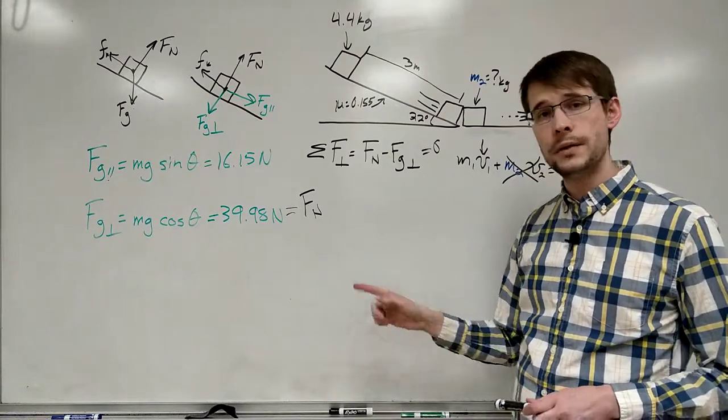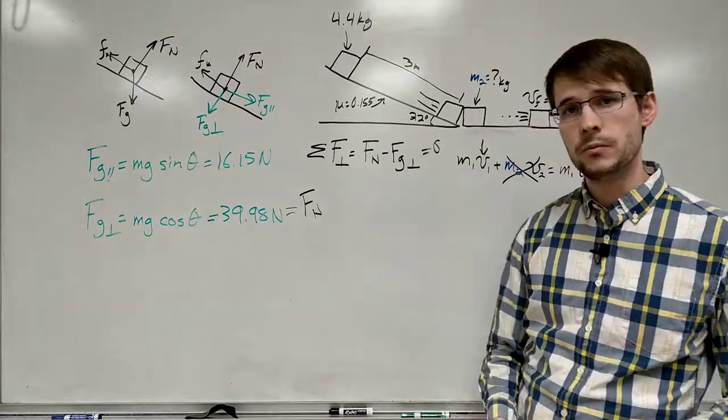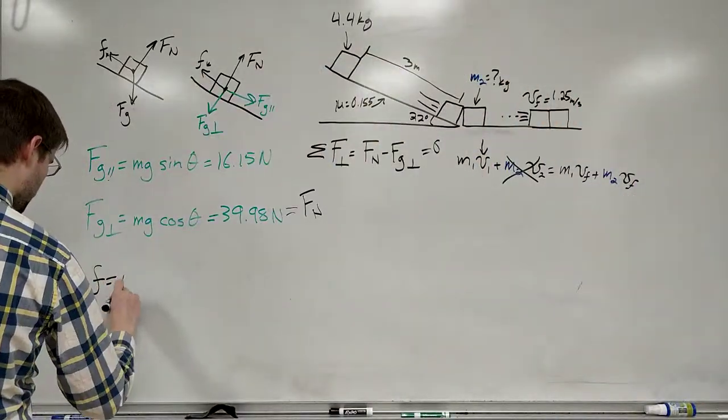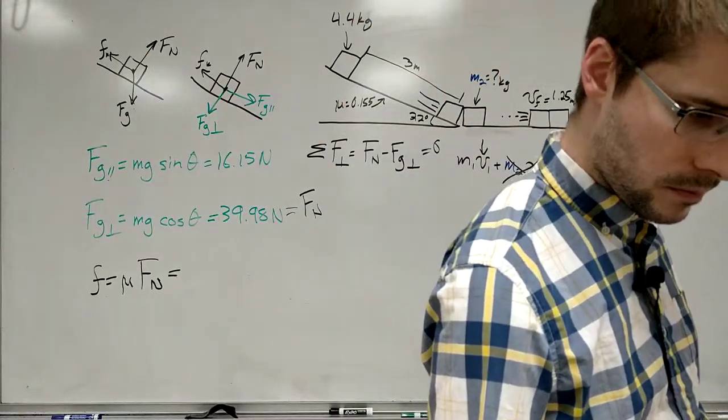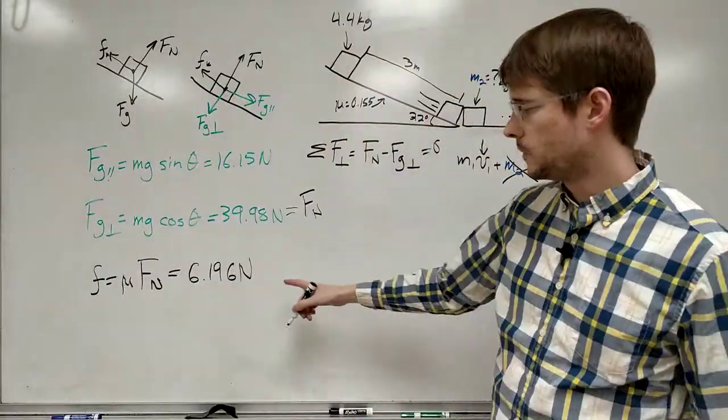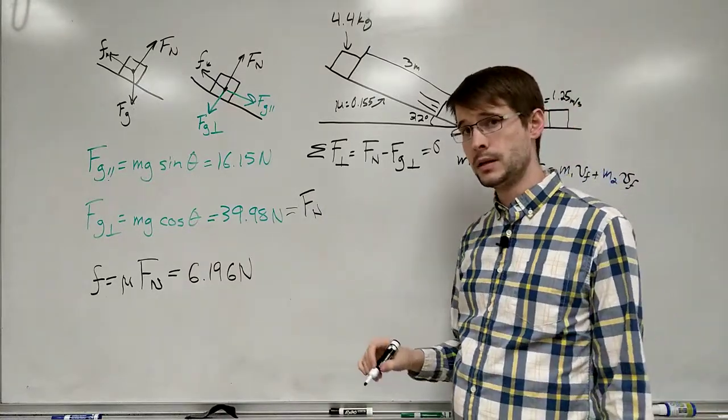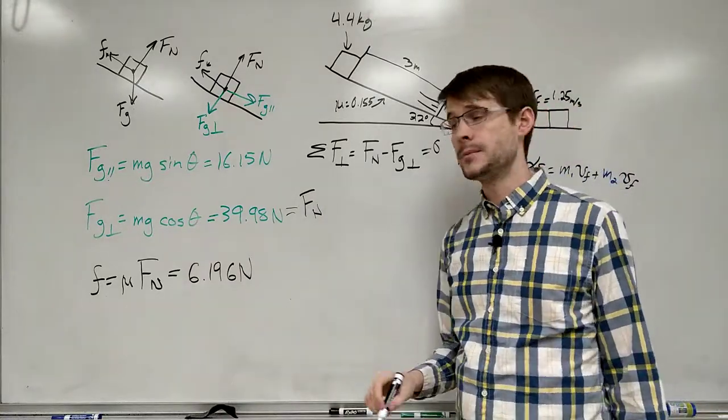With that settled, we can figure out what the friction force is in this case, because it's equal to mu times the normal force. Now that we've got our friction force, we can go ahead and do one more sum of forces, but in the parallel direction to figure out the acceleration of this object.